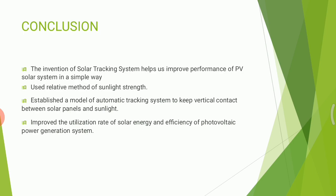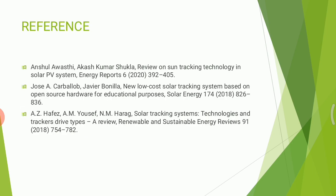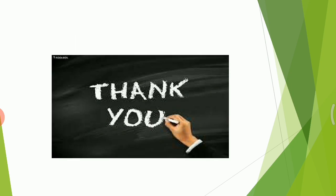In conclusion, the invention of the solar tracking system helps improve the performance of PV solar systems in a simple way. Using a relative method of sunlight strength, it establishes a model of an automated tracking system to keep vertical contact between solar panels and sunlight, improving utilization rate of solar energy and efficiency of photovoltaic power generation. The tracking system is helpful both for efficiency and economically. References were taken from general books and papers.